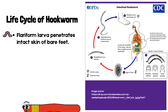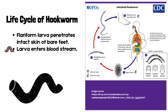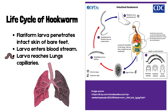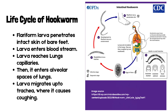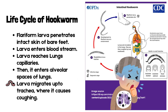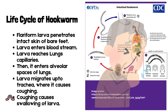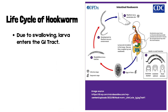Life cycle of hookworm: Filariform larva penetrates the intact skin of bare feet. The larva enters the bloodstream, then reaches the lung capillaries, and enters the alveolar spaces of the lungs. The larva migrates up to the trachea, where it causes coughing. Coughing causes swallowing of the larva, which then enters the GI tract.